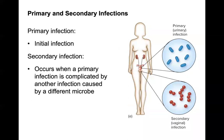A primary infection is an initial infection. A secondary infection results when a primary infection is complicated by another infection caused by a different microbe. For example, the common cold is caused by a viral infection, and if left untreated or prolonged, you can develop strep throat or a more serious bacterial infection — that would be a secondary infection.